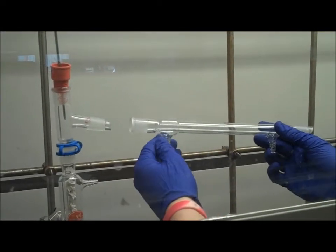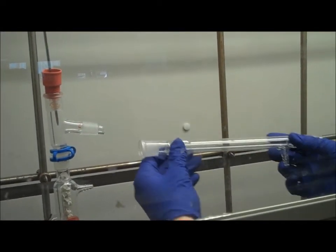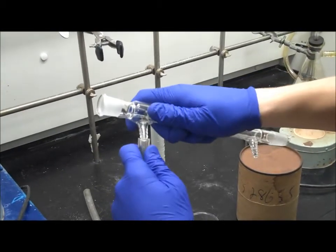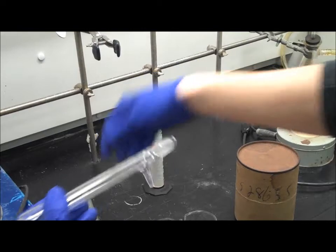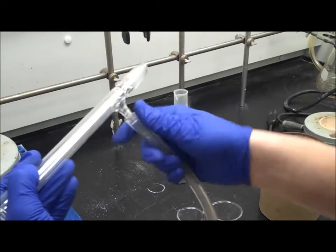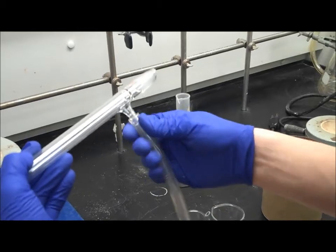Next, we're going to connect the condenser to the apparatus. First, we're going to connect two hoses. One hose is for water leaving the condenser, and the other is for water entering the condenser from the sink.